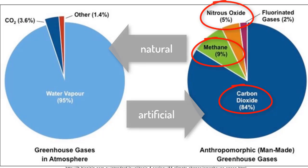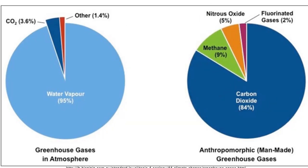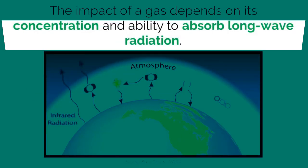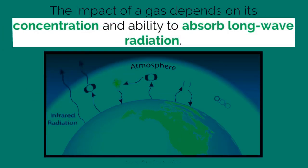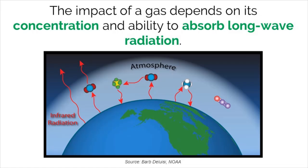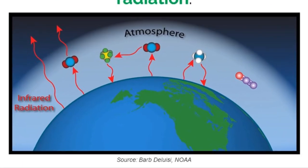As seen on the last slide, there are many different types of greenhouse gases, both naturally occurring and made by humans. The impact of a particular greenhouse gas depends on its concentration and ability to absorb long-wave radiation that is emitted from the earth's surface.